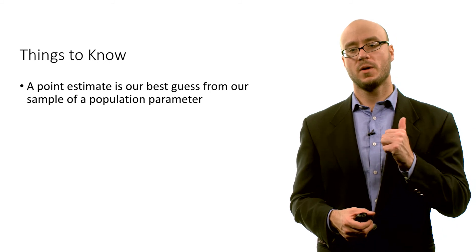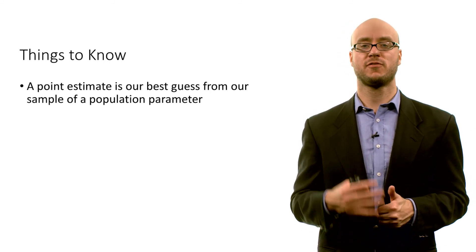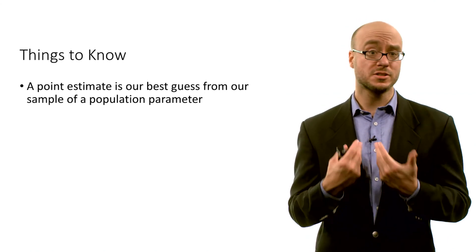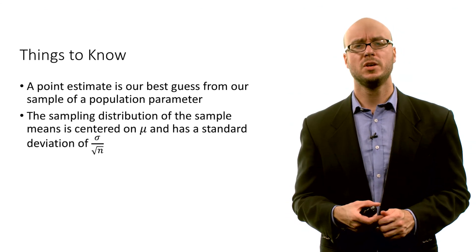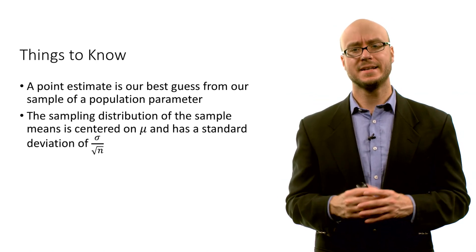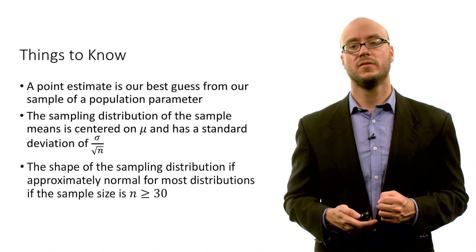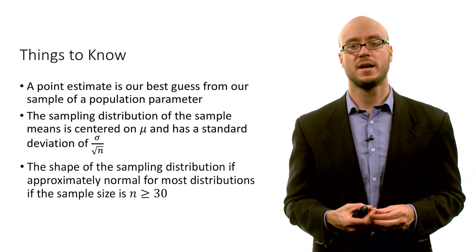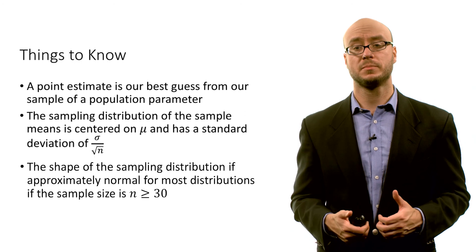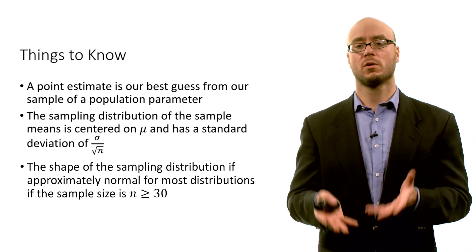To summarize our discussion of the sampling distribution: the point estimate is simply our best guess from our particular sample of some population parameter — the sample mean is, without additional information, a single best guess for the population mean mu. The sampling distribution of the sample means is centered on mu and has a standard deviation of σ/√n, which we call the standard error of the sample mean. The shape of the sampling distribution will be very close to normal for most distributions if the sample size is 30 or greater. We will now explore further aspects of the sampling distribution and dive deeper in the second part of this lecture.